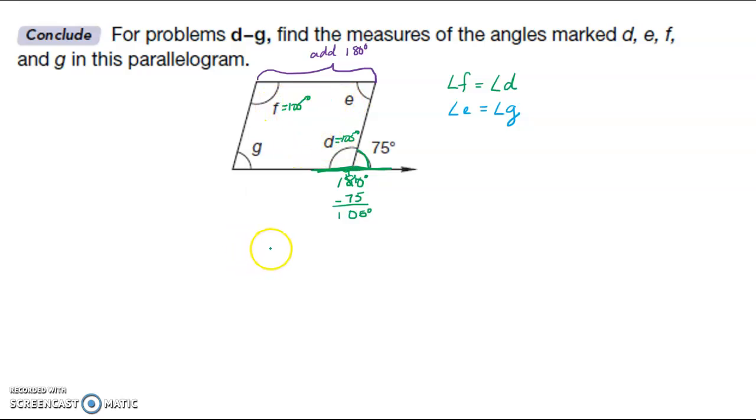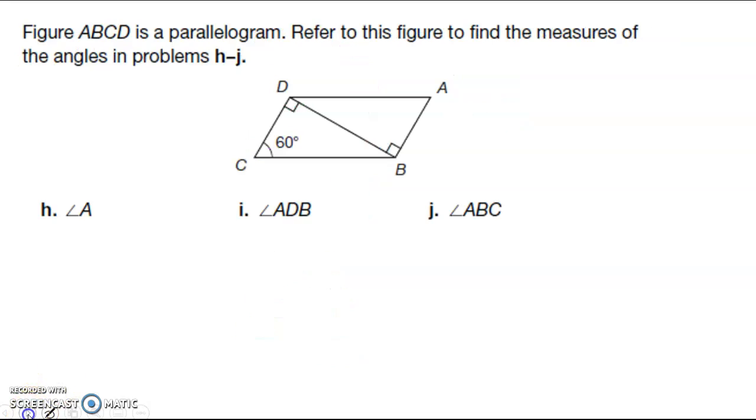And if I know that F plus E is equal to 180, and F is 105, then I know that if I subtract it, I'm going to get E is equal to 75. Let me change some colors here. So this is going to be 75 degrees, and these are the same, so this is 75 degrees.